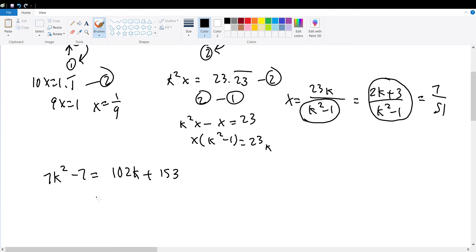7k squared minus 7 is the same thing as 102k plus 153. And then we subtract all the terms to the left side, 7k squared minus 102k minus 160 is the same thing as 0. Now this can be applied to the quadratic formula to be k is equal to negative a, which is negative 7, all over